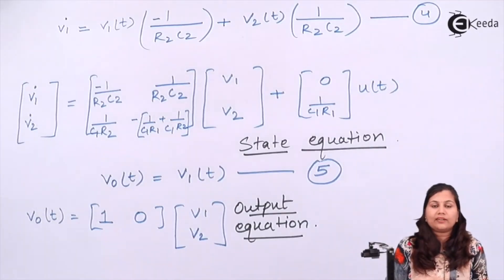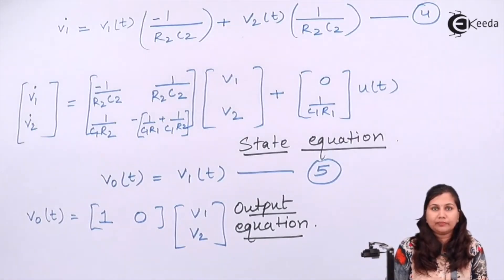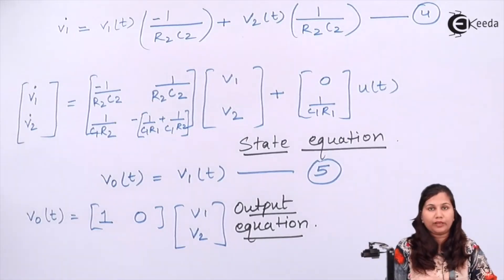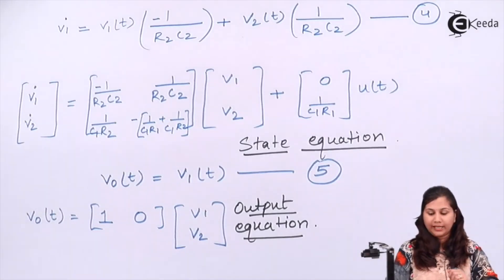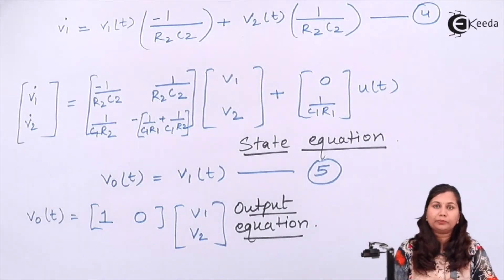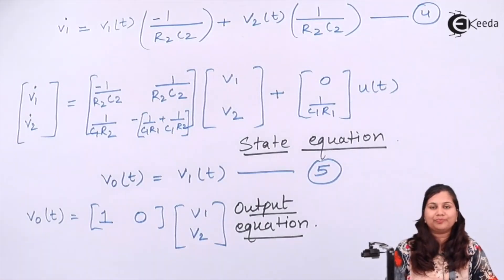In this way we can find out the state space representation for any type of system. We choose the state variables, write the equations for their derivatives, and write the output variable equation. I hope this problem is clear to you.